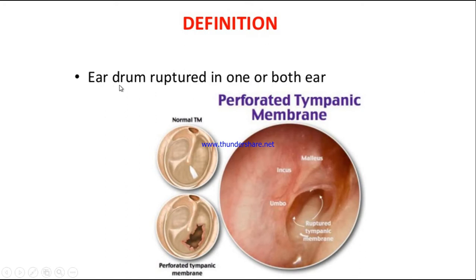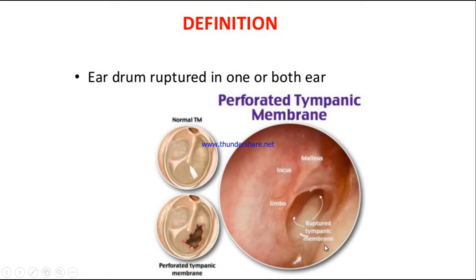The eardrum can be ruptured in one or both ears. You can see here a normal tympanic membrane — it is oval, semi-transparent, and pearly gray. In contrast, the perforated tympanic membrane shows a visible hole. In the image you can also see the malleus and incus, and the hole in the ruptured tympanic membrane.